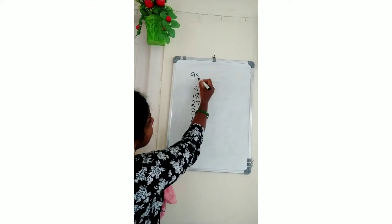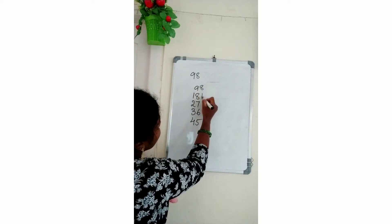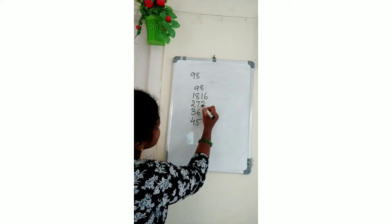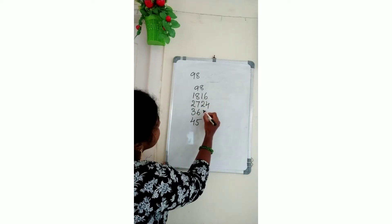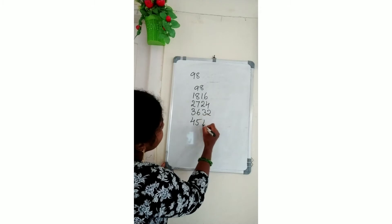On the side, immediately write the 8 table also. 8 ones 8, 8 twos 16, 8 threes 24, 8 fours 32, 8 fives 40.